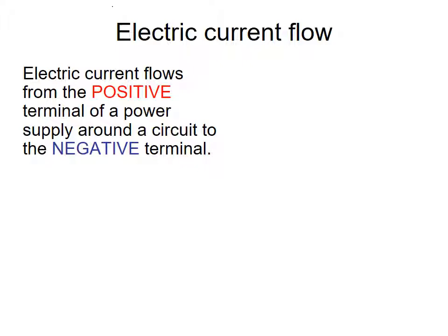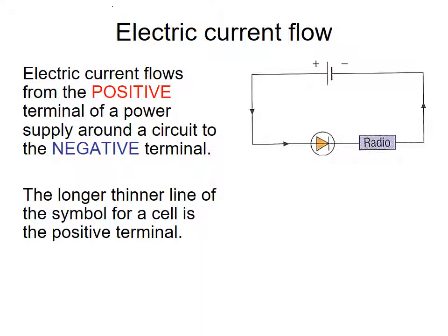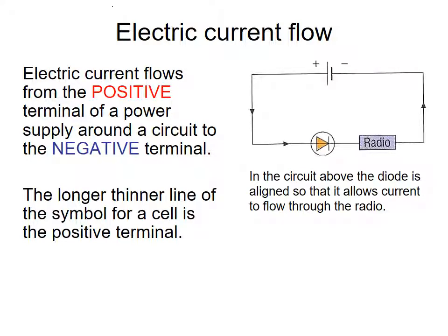In terms of electric current flow, current flows from the positive terminal to the negative terminal — in electromagnetism that changes slightly with conventional current, but for electrical circuits that's all you need to know. The longer, thinner line of the cell symbol is the positive terminal and the short, thick line is negative. In the circuit shown, the diode is aligned so current flows in the correct orientation for DC.